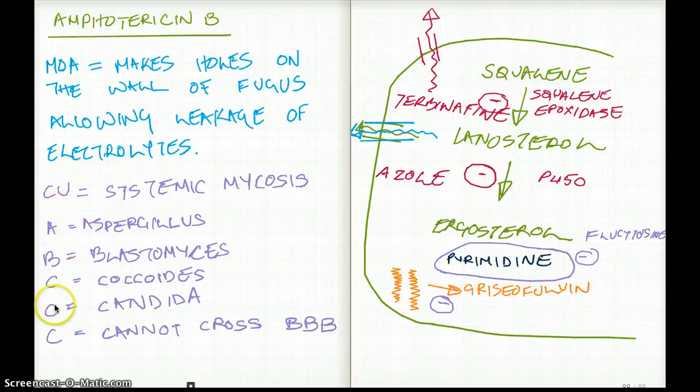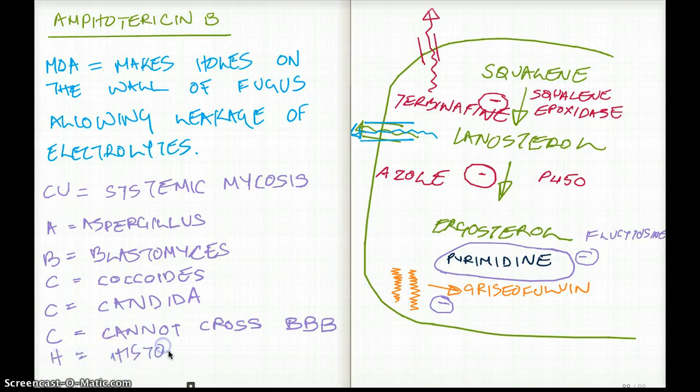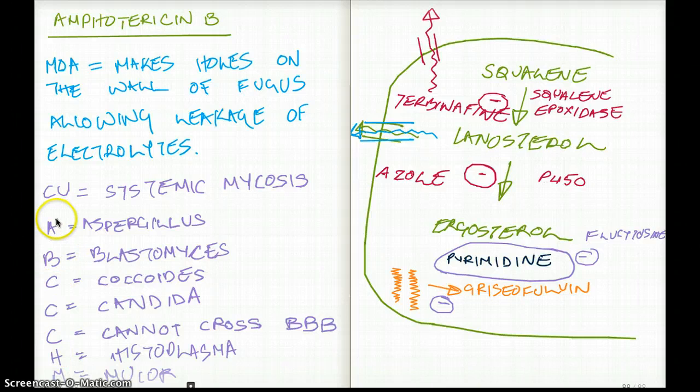Now, there are more systemic mycosis other than the ABCCC that I mentioned. There is also H for histoplasma and M for mucor. So, but in general, Amphotericin B is used for systemic mycosis. So, you can remember it kind of ABCCC, C for coccidioides, Candida cannot cross blood-brain barrier, H for histoplasma and M for mucor.